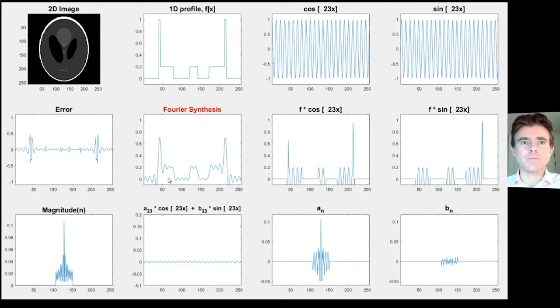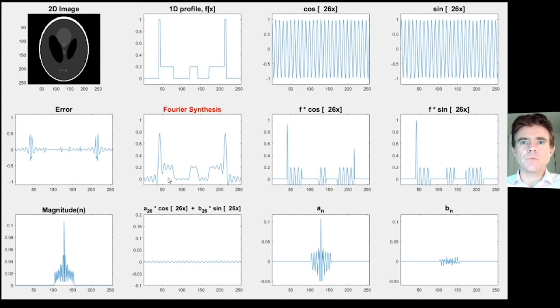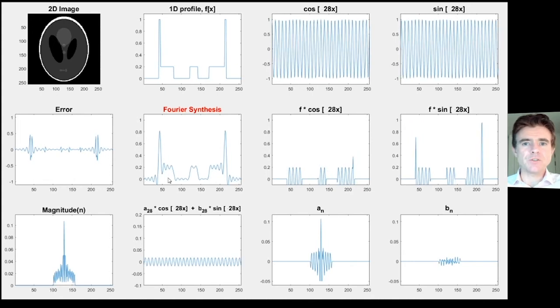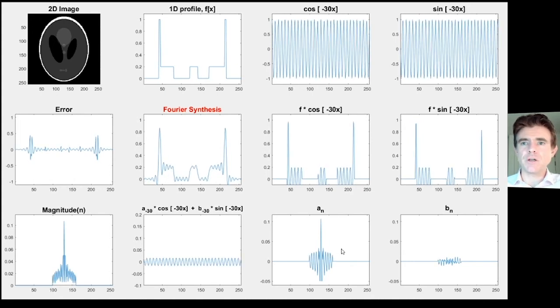At this point, we can notice that the a_n coefficients are notably larger than the b_n coefficients. Have a think about why that is.